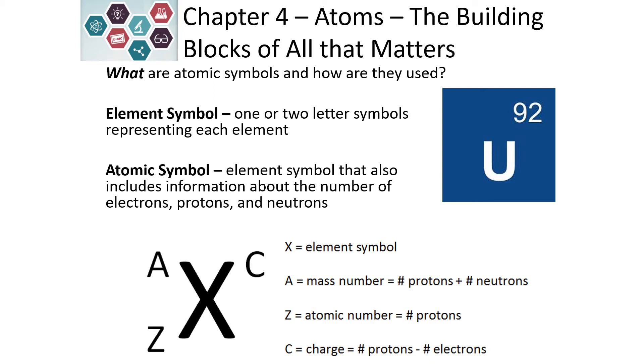We represent atoms in lots of different ways. One way that we can represent them is by the elemental symbol. This is a one or two letter abbreviation of the element's name. Sometimes the abbreviation makes sense, like O for oxygen or C for carbon. And sometimes it's based on an ancient Greek name, like gold. Its symbol is AU.